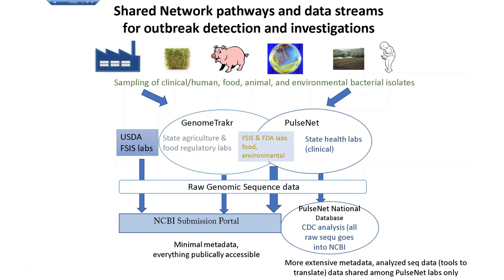This slide from one of our collaborators at FDA shows how the network functions right now. Samples from clinical, human, food, animal, and environmental sources are taken by various agencies — FDA's Genome Tracker Network, CDC's PulseNet Network, state clinical health labs, and the USDA Food Safety Inspection Service. They submit the raw genomic sequence data to NCBI, typically from Illumina instruments — either 2x250 or 2x150 — and supply minimal metadata.